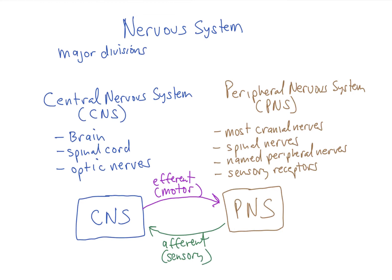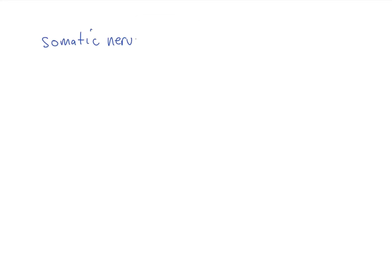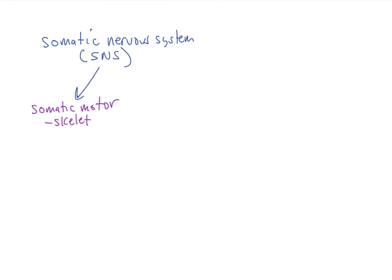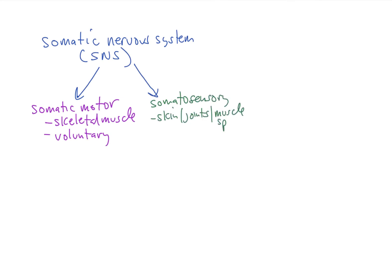We have the somatic nervous system or SNS, which is made up of the somatic motor system that innervates skeletal muscles — that's voluntary — and the somatosensory system, which carries afferent information from the skin, joints, and muscle spindles.